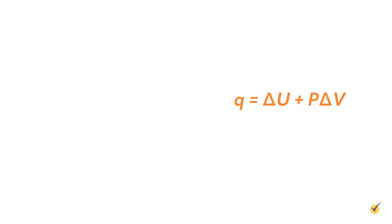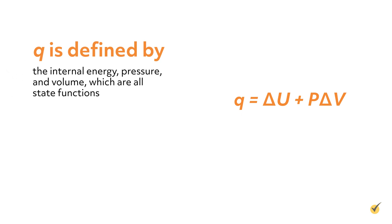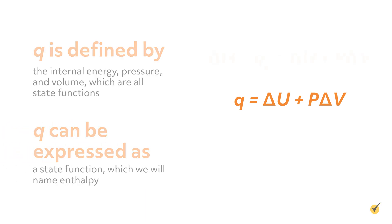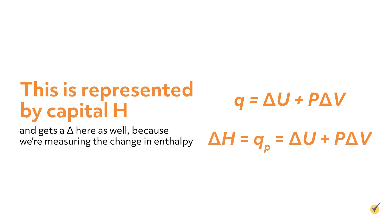Alright, let's return to our definition of delta U. Rearrange this equation to solve for heat, Q. And now, note that Q is defined by the internal energy, pressure, and volume, which are all state functions. That means that Q can be expressed as a state function, which we will actually name enthalpy. This is represented by capital H and gets a delta here as well, because we're measuring the change in enthalpy.